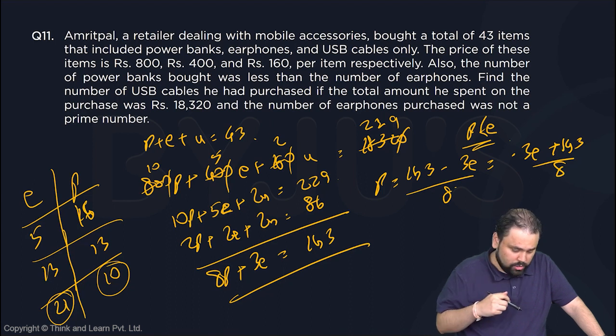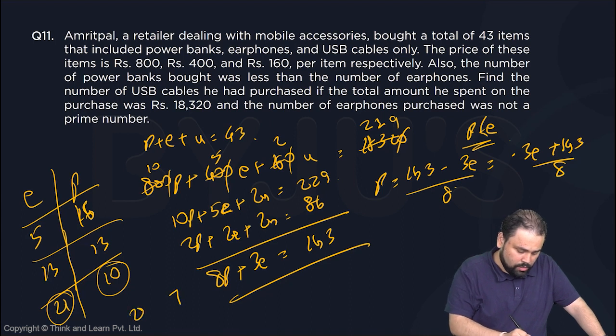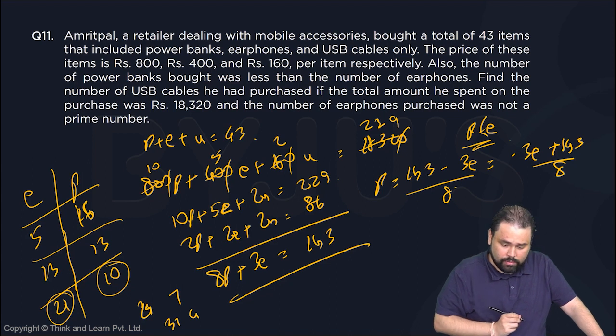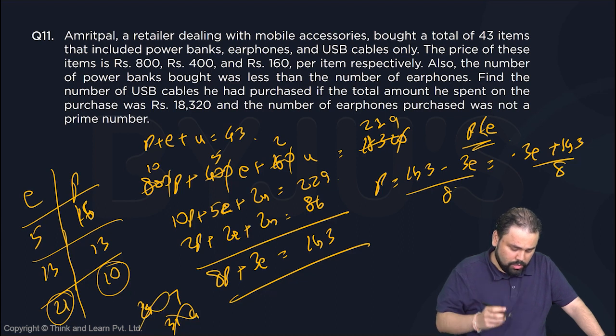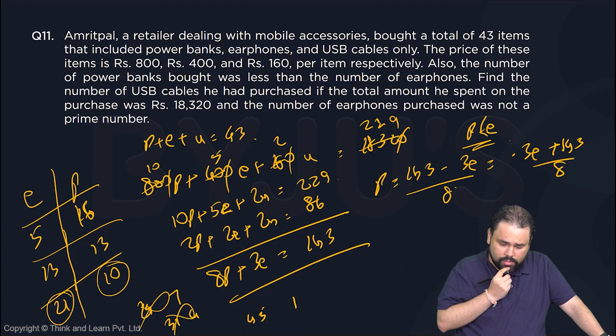If I reduce further, this will become 7 and 29, which is not possible. Then 4 and 37. But we need to find the number where earphones purchased was not a prime number. Oh, earphones can't be a prime number, so 37 is not possible, 29 is not possible.